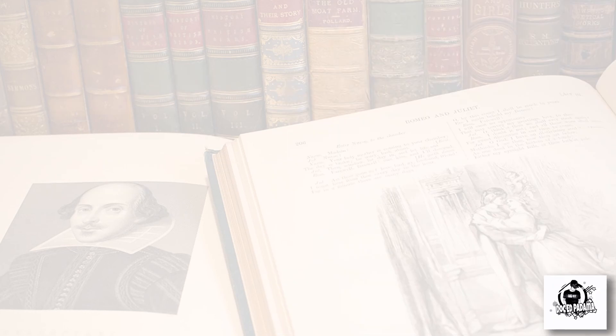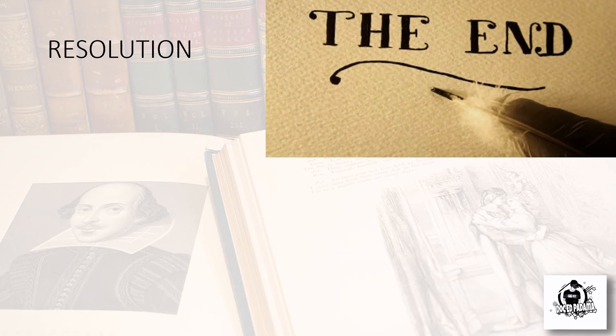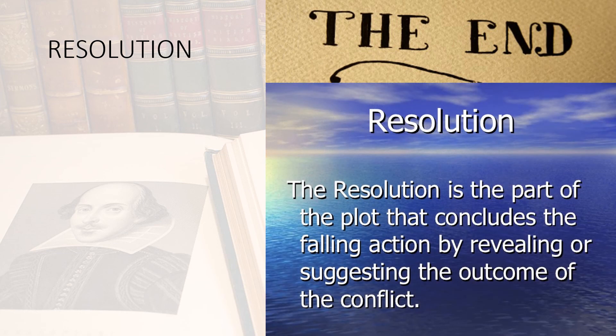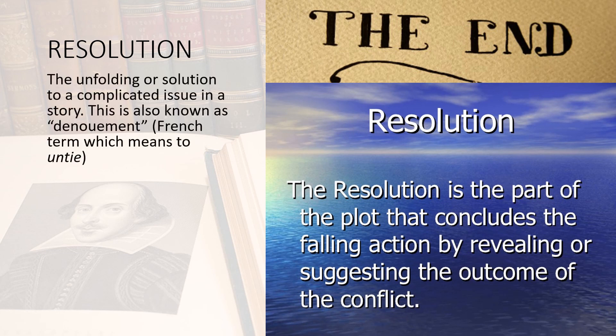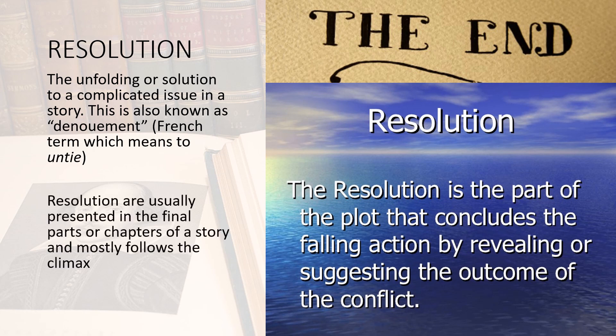The last element in literary criticism is resolution. The resolution signals the end of the story and presents the outcome of the conflict. It is the part of the plot that concludes the falling action by revealing or suggesting the outcome of the conflict. The resolution — also known as the denouement — is the unfolding or solution to a complicated issue in a story, usually presented in the final parts or chapters and mostly following the climax.